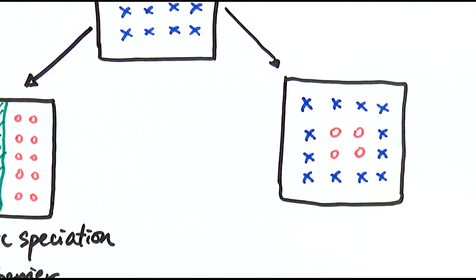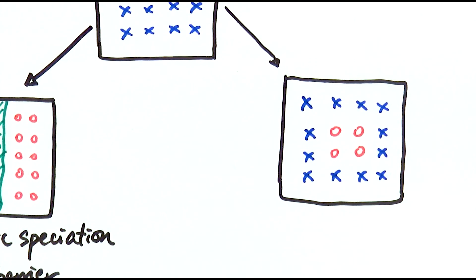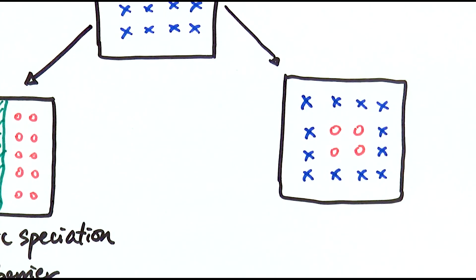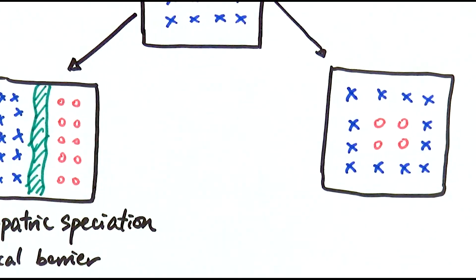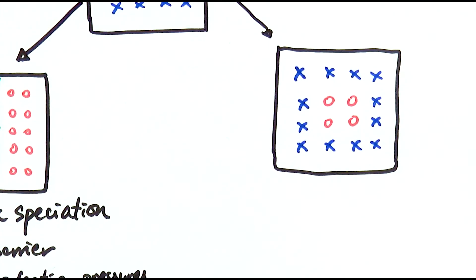It could be a physical appearance thing that they couldn't recognize each other, or it could be mating behaviors that are not recognized, hence the mating preference that leads to sympatric speciation. Sympatric speciation is quite rare — it doesn't happen as often as allopatric — but it does occur.